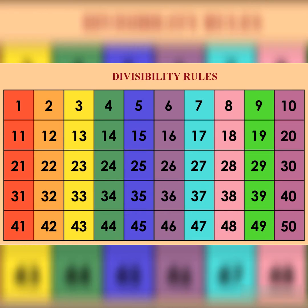Divisibility by 8 – a number is divisible by 8 if the number formed by its last three digits is divisible by 8.